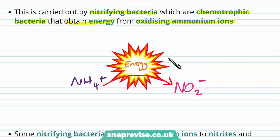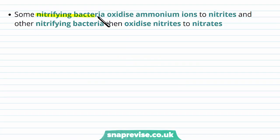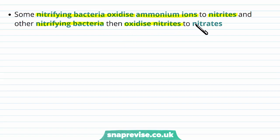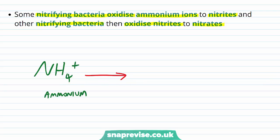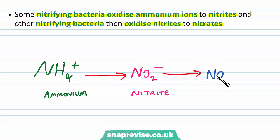They can use this energy to do certain other things. Some nitrifying bacteria oxidize the ammonium ions to nitrites — and that's how they get their energy. And then some bacteria do the second part: other nitrifying bacteria oxidize nitrites to nitrates. Originally we have ammonium compounds being oxidized to nitrite, and the nitrite can be oxidized to nitrate.